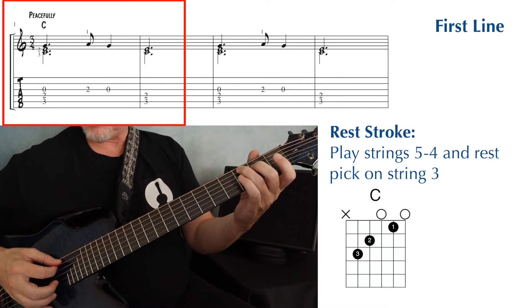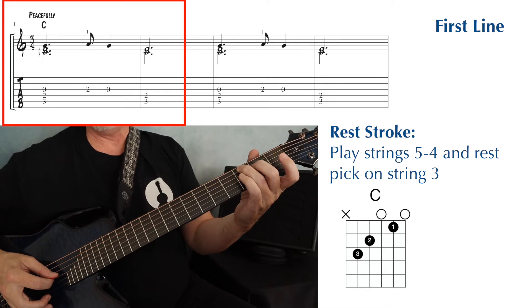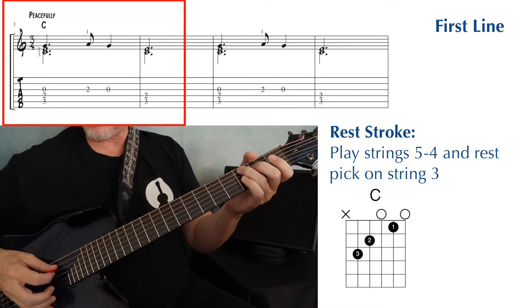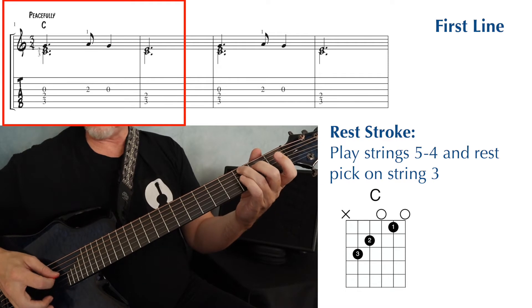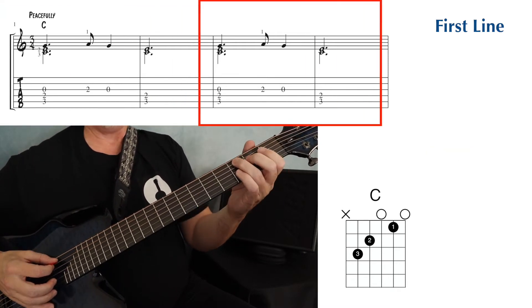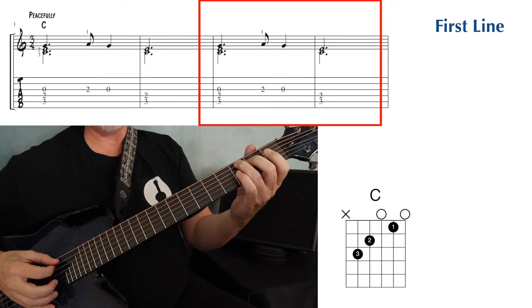So if the third string is ringing, that resting on the third string will stop that note from ringing. The next two measures are the same as the first two measures.